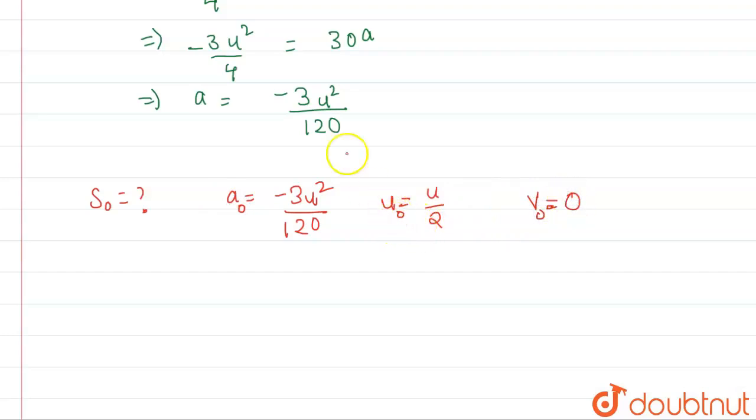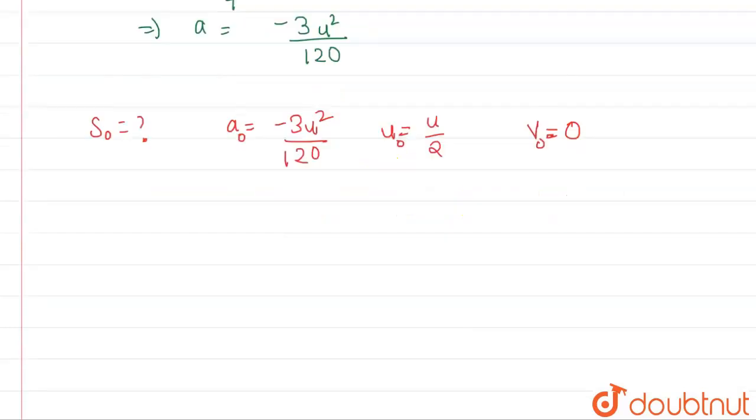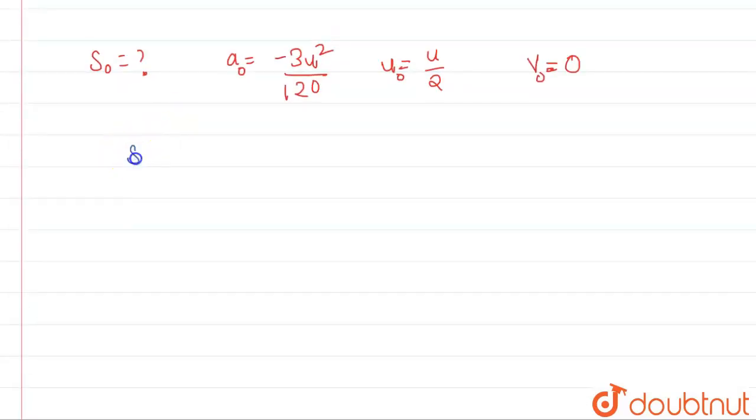Now which equation we'll use? We'll use again the same equation. Using the same equation, v² = u² + 2as. There will be knots everywhere. So now what we'll have? We'll have 0. u² is u²/4 plus 2a.